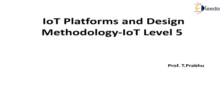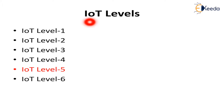So far we have seen Level 4 systems, Level 3 systems, Level 2, Level 1, and IoT systems. This Level 5 system has multiple N nodes compared to IoT Level 4 systems, and additionally has one coordinator node. The N nodes can perform both sensing and actuation purposes. We are going to see the details about IoT Level 5 — we have crossed 4 levels, so now the 5th level.